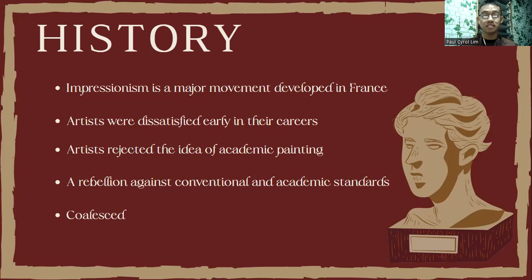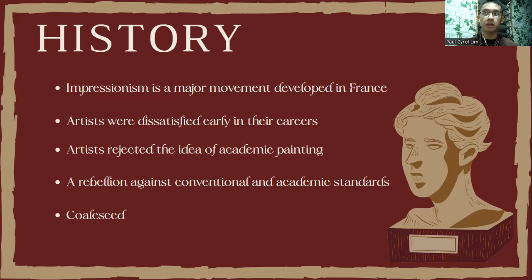Impressionists rebelled against classical subject matter and embraced modernity, desiring to create works that reflected the world in which they lived. These artists became dissatisfied early in their careers with academic teaching's emphasis on depicting historical or mythological subject matter with literary or anecdotal overtones. They also rejected the conventional imaginative or idealizing treatment of academic painting. In other words, the Impressionists rebelled against past art styles — they wanted something new, a new aesthetic. They wanted to break those standards, and so Impressionism was born.